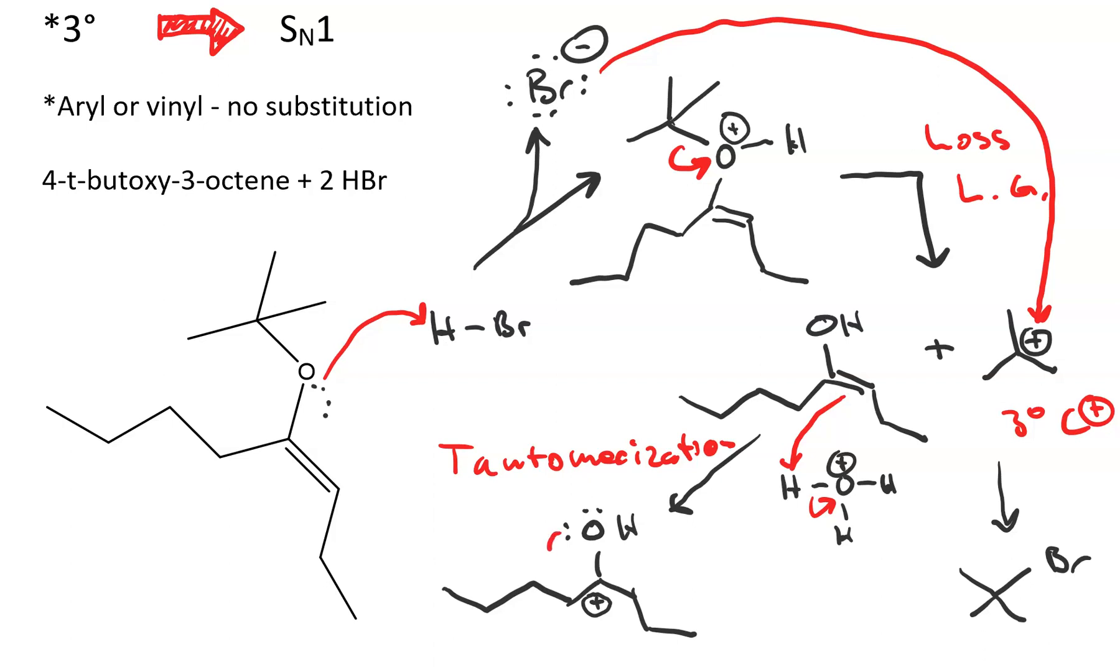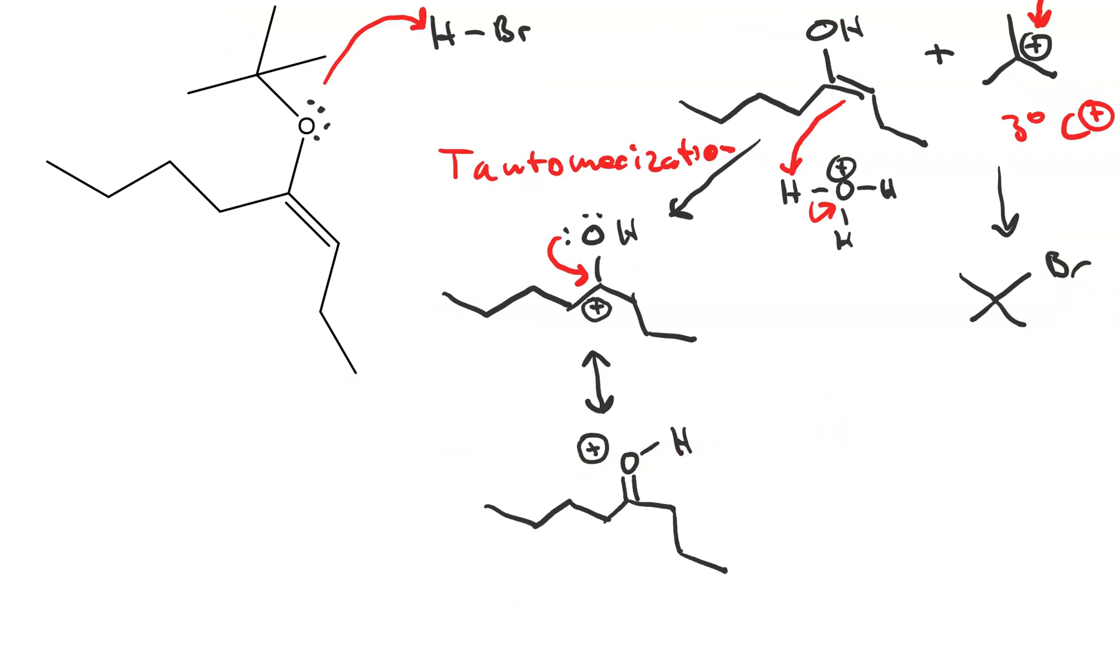In the next step a lone pair in oxygen turns into a carbonyl pi bond. Now we just need a base to come along and deprotonate this oxonium. And since we're in an acidic solution we have plenty of water, being that water is the solvent, and we end up with a ketone.